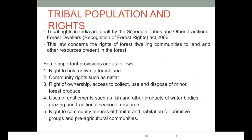They will get subsidized products from the government but are not supposed to sell these. Community rights such as nistar are recognized. They have also been given ownership, access to collect, use, and dispose of minor forest produce. Minor forest produce includes all non-timber forest produce, such as those traditionally collected within and outside village boundaries — for example honey, tendu leaves, and medicinal herbs.